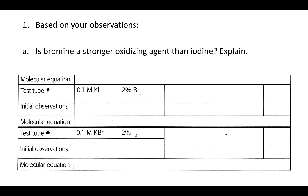You want to look at these two reactions — these are the last two reactions on your report sheet. For one of these reactions nothing would have happened; the initial observations you made for the two original solutions would be the same as the observations for the final solution. For the other one something would have happened, so you want to focus on the equation in which something did happen.